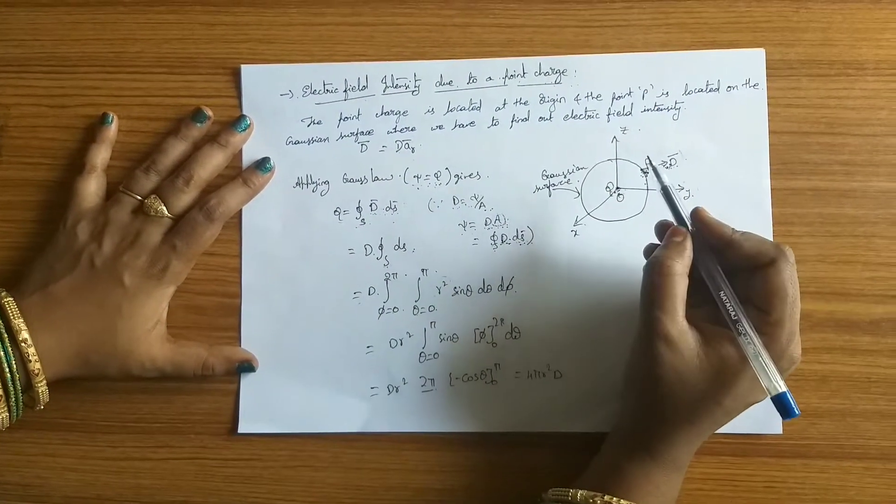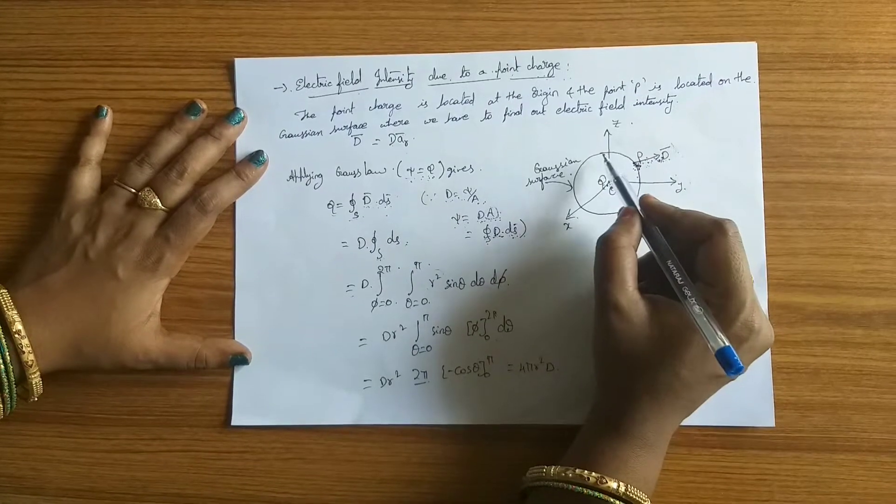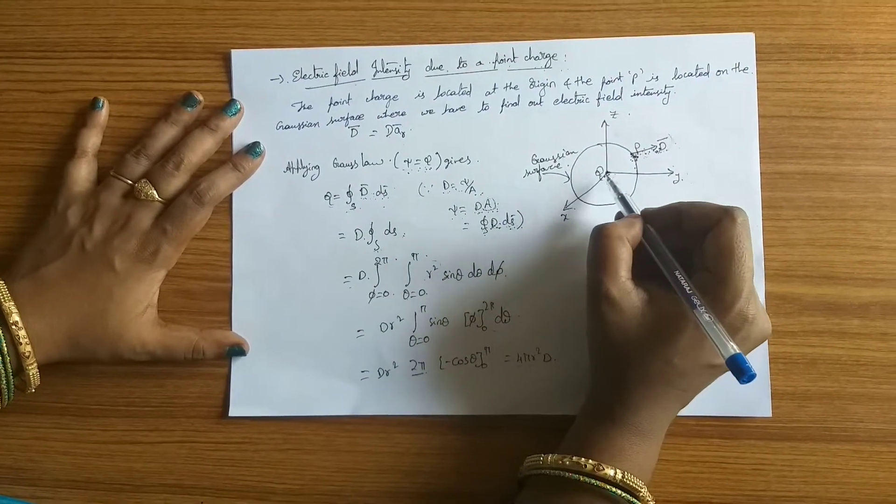The charge where we have to find out electric field intensity is located on the Gaussian surface and the charge q is located at the origin.